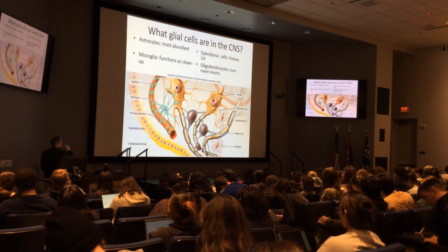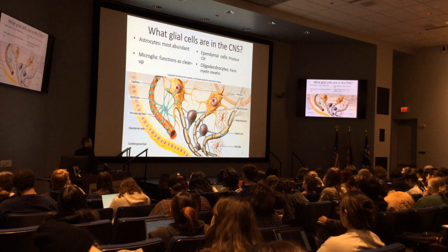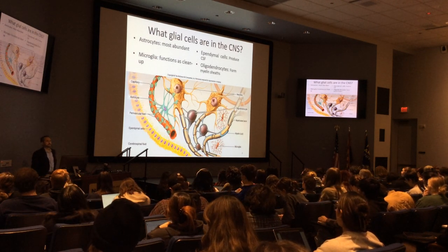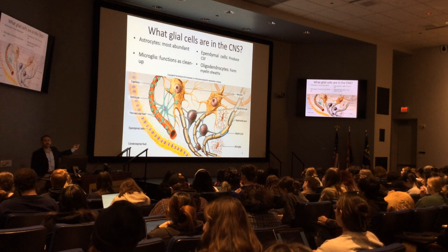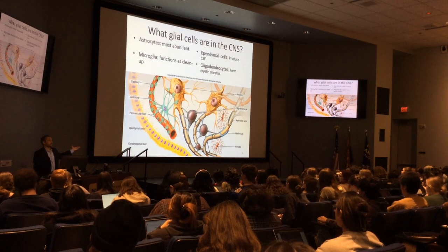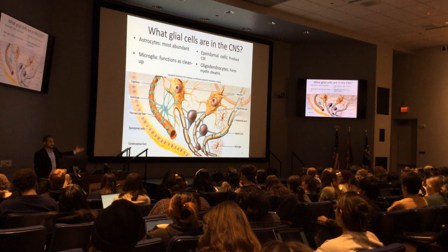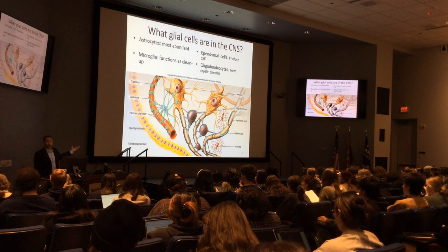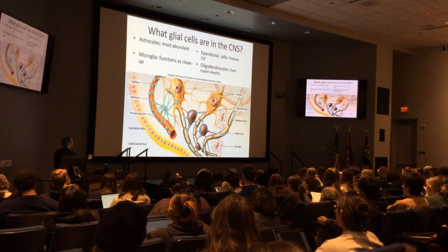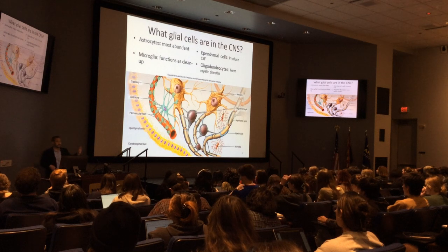Cancer of any one of these glial cells in the brain is glioblastoma. Oftentimes it's an astrocyte because they're the most abundant, but it could be any of them. When they become cancerous and mutate and grow out of control, you can't really tell what they were. That's glioblastoma — a mutation in the brain's central nervous system of any one of these glial cells.